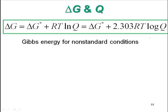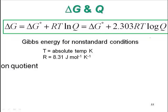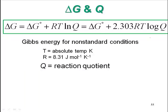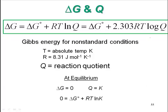Gibbs free energy for non-standard conditions. Q is the reaction quotient, R is the gas constant, and Q is the reaction quotient for non-standard conditions. At equilibrium, Q equals K, there's our reaction quotient.